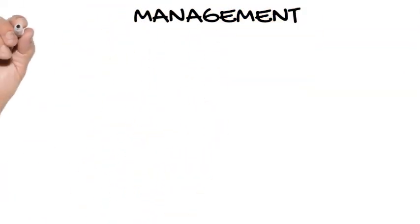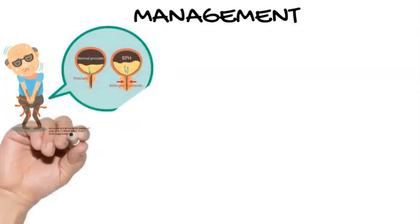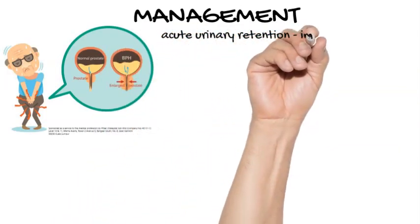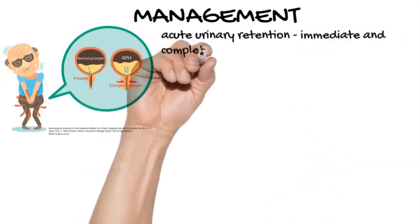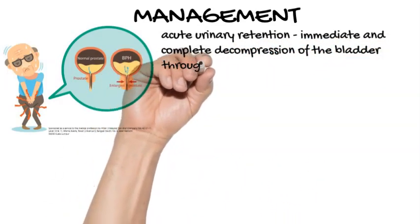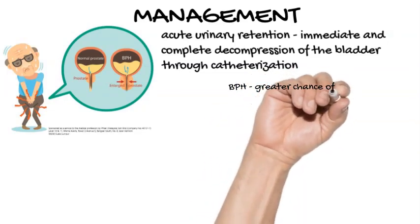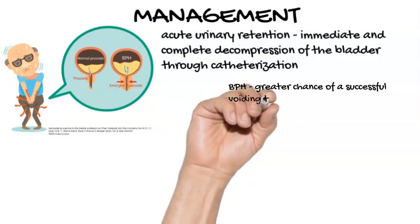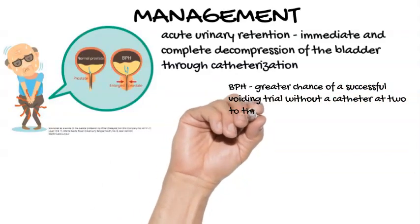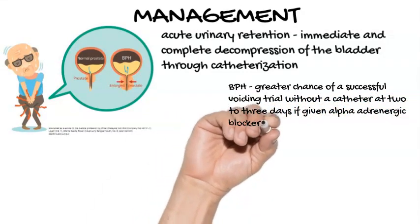Initial management of urinary retention. Acute urinary retention should be managed by immediate and complete decompression of the bladder through catheterization. Hematuria, hypertension, and post-obstructive diuresis are potential complications of rapid decompression. However, there is no evidence that gradual bladder decompression will decrease these complications, so rapid and complete emptying of the bladder is recommended. In patients with known or suspected BPH, up to 70% of men will have recurrent urinary retention within one week if the bladder is simply drained. Men with BPH have a greater chance of a successful voiding trial without a catheter at two to three days if treated with alpha-adrenergic blockers for three days starting at the time of catheter insertion.